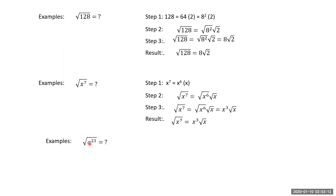For the square root of a to the power 21: the largest perfect square is a to the power 20, so the root is a to the power 10. The leftover is root a. Therefore the answer is a to the power 10 times root a.